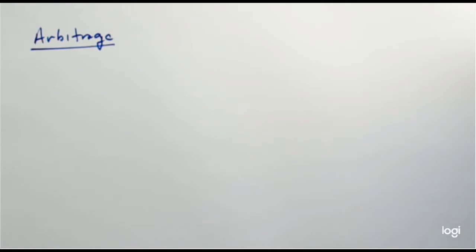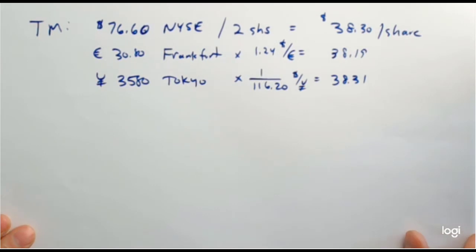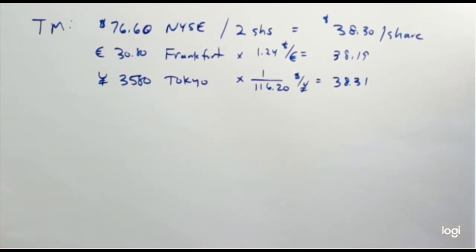The law of one price is based on a perfect market. Even with slight differences in taxes, transaction costs, and exchange rate risk, the $30 versus $300 drug example would still present an arbitrage opportunity. The arbitrage profits would just be a little less, and it'd be more of a hassle to do the transaction. But nevertheless, the concept still holds. Let me give you a more concrete example of an arbitrage situation using Toyota Motor Company.